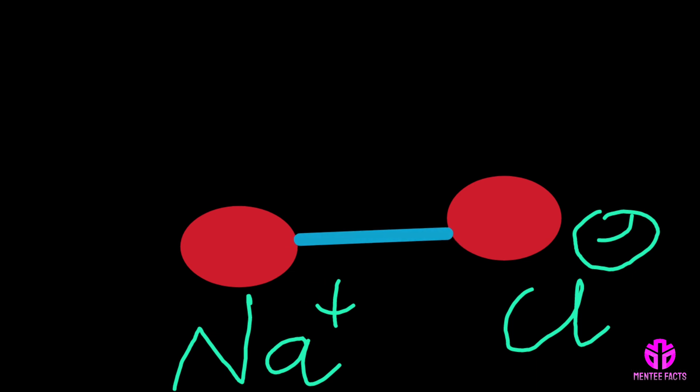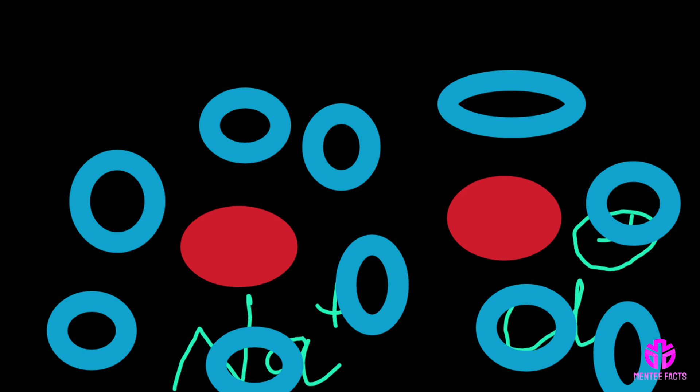Water molecules pull the sodium and chloride ions apart, breaking the ionic bond. The sodium and chloride atoms are surrounded by water molecules.